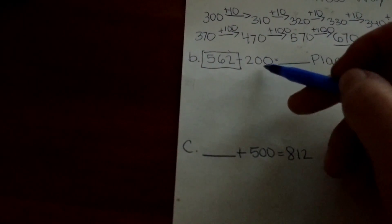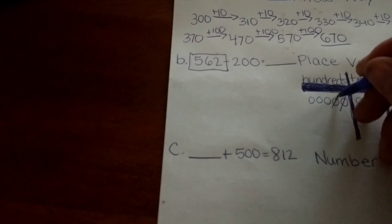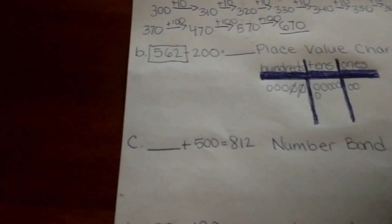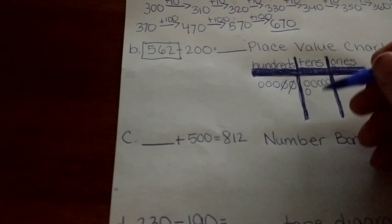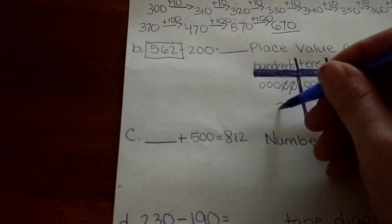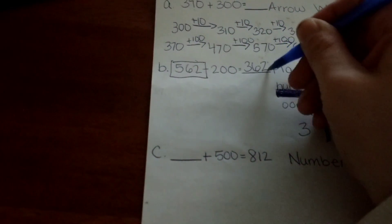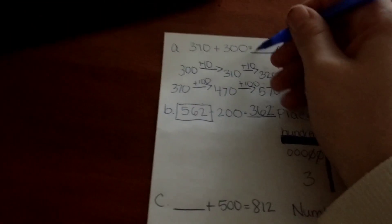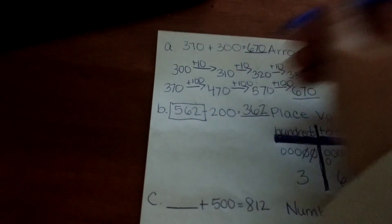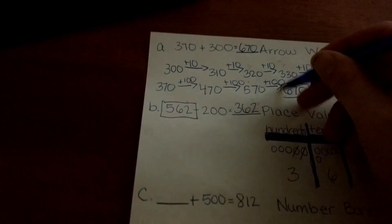It's asking us to subtract 2 hundreds. What does that leave us with? It leaves us with 2 ones, 6 tens and 3 hundreds. Answer's 362. I forgot to put the answer up here—670 is our final answer on the arrow way.